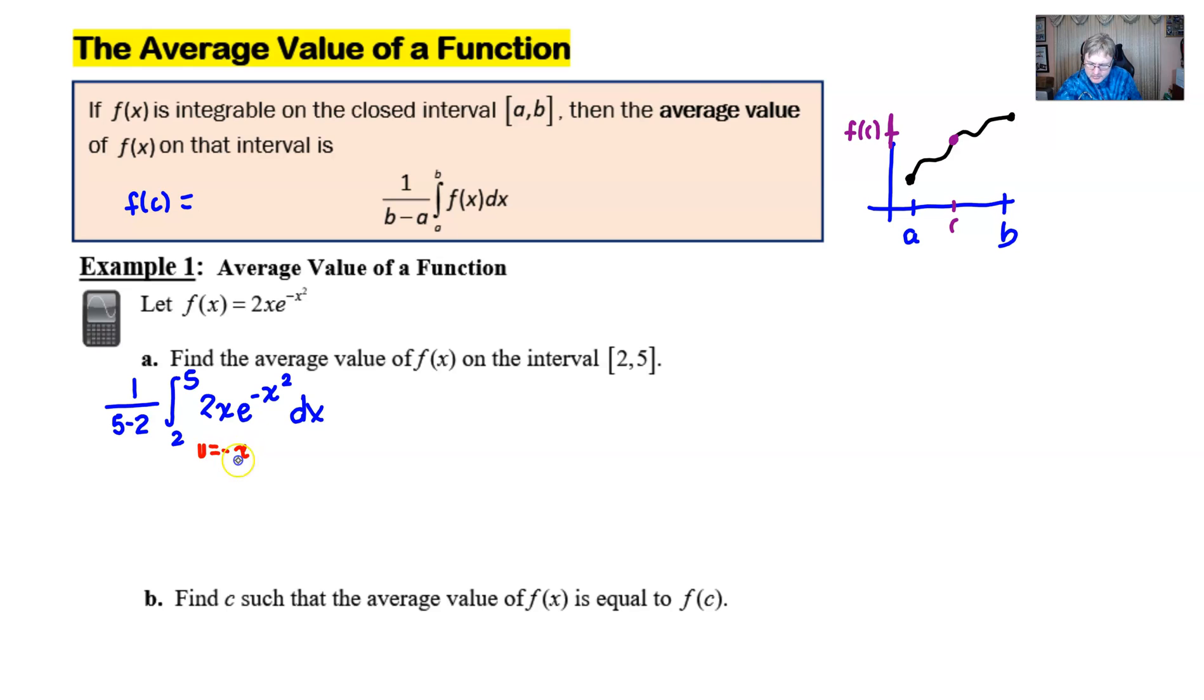The average value of a function is defined as the integral from a to b with a 1 over b minus a in front. You're finding your area between the curve and the x-axis, but you're dividing it by the difference between b and a. We will be able to use u substitution. We have this 2x in front, which is pretty much exactly what we hoped to have, albeit without the negative, but we can fix that by just placing that in front.